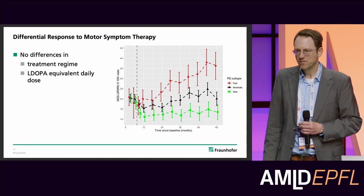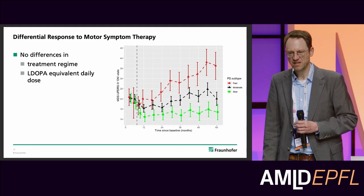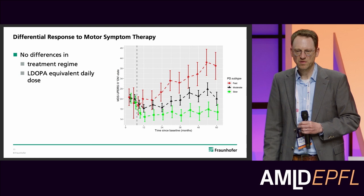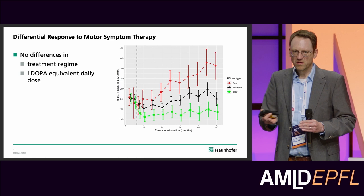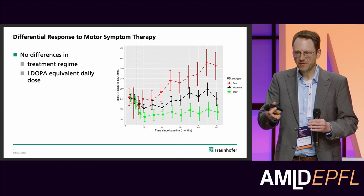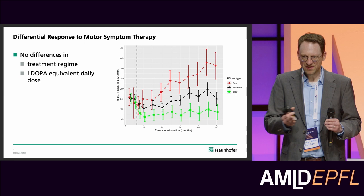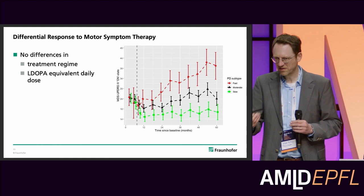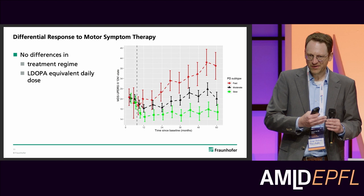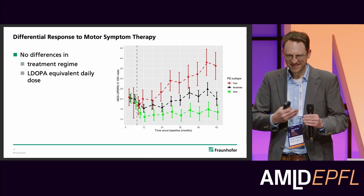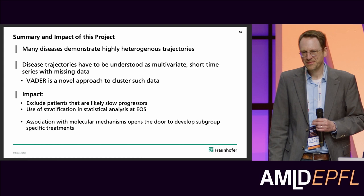One last thing I forgot to mention: these clusters also seem to respond differently to motor symptom therapy, which was also quite an interesting finding — while not showing differences in treatment regime or L-DOPA equivalent dosage. It is not easy to reproduce such findings in other datasets, partly because patients in other datasets might not have the same treatment timing. Our clustering was built on the so-called off-score, when patients had not been on treatment for at least six hours. In other studies, people may have just recently taken their medication, making a direct comparison no longer valid.